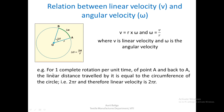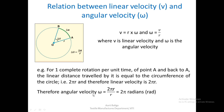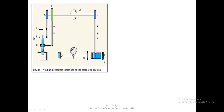For one complete rotation per unit time, if a particle moves from point A back to A, the linear distance traveled equals the circumference of the circle, which is 2πr. Therefore the linear velocity is 2πr per unit time, and the angular velocity would be 2πr / r = 2π radians. With this background, we can understand how this applies to our mechanism.